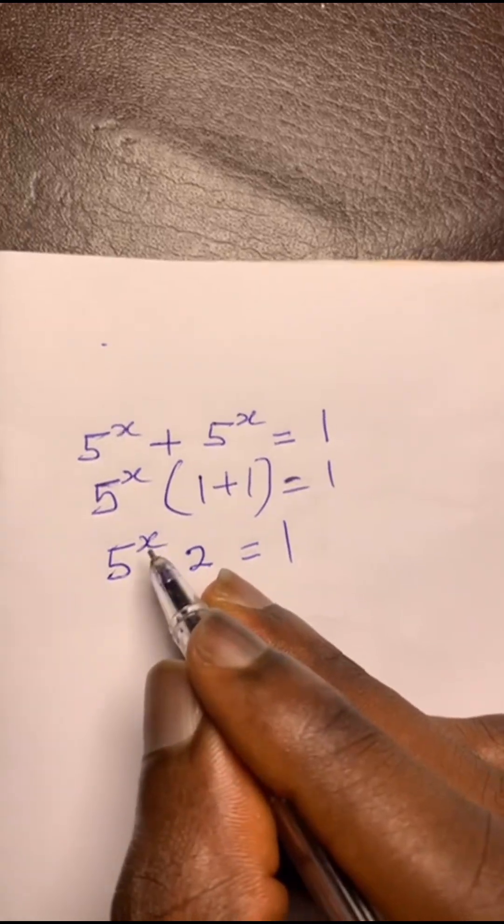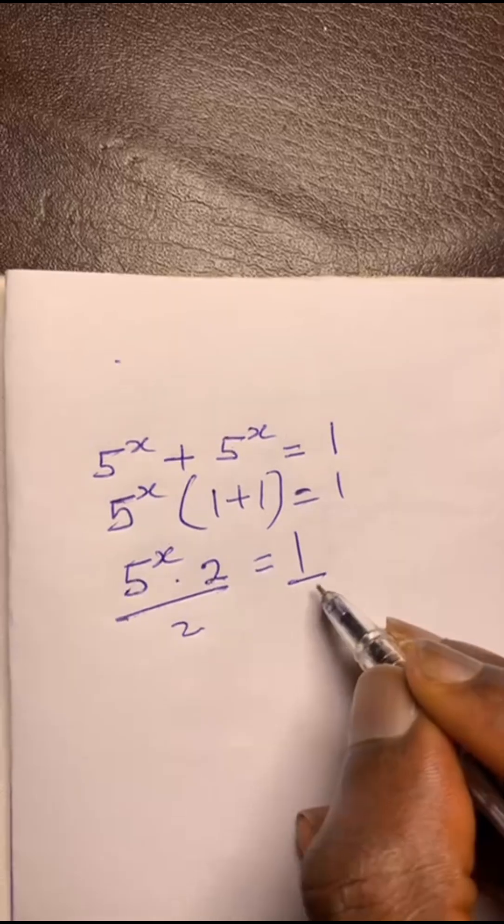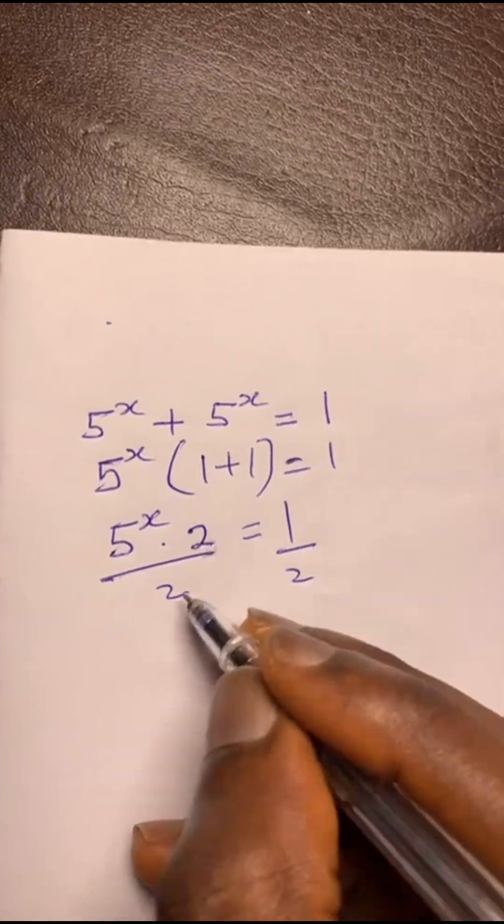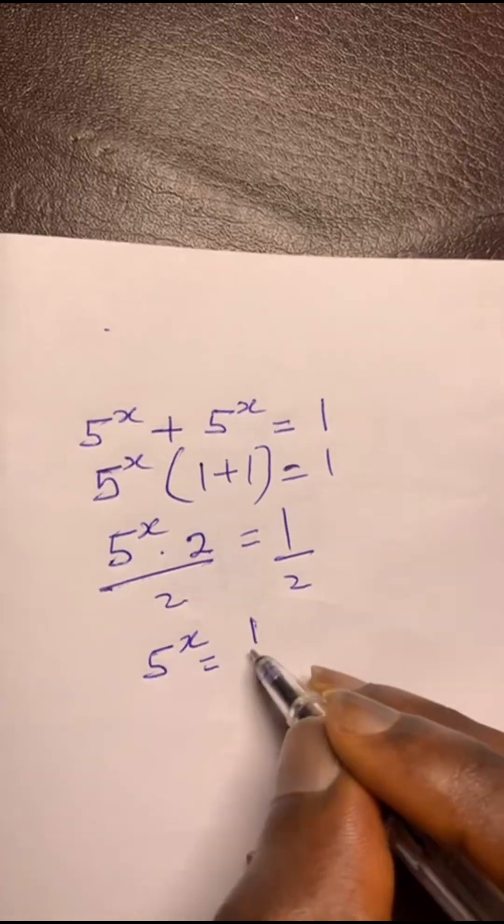Now I'm looking for x, so I got to take this away. Divide on both sides by 2. Now this takes away this, I'm left with 5 to the power of x equals 1 over 2.